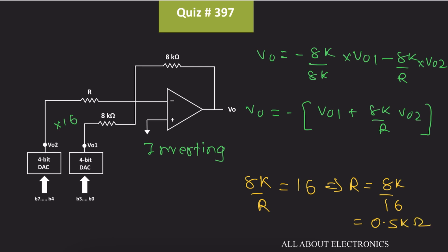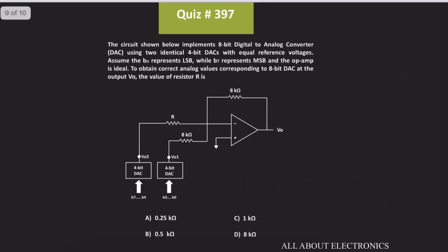So with this value of R, we can construct the 8-bit DAC and obtain the scaling factor of 16. Therefore, for the given circuit, the required value of R is equal to 0.5 kilohm. Hence, for the given question, option B is the correct answer: 0.5 kilohm.